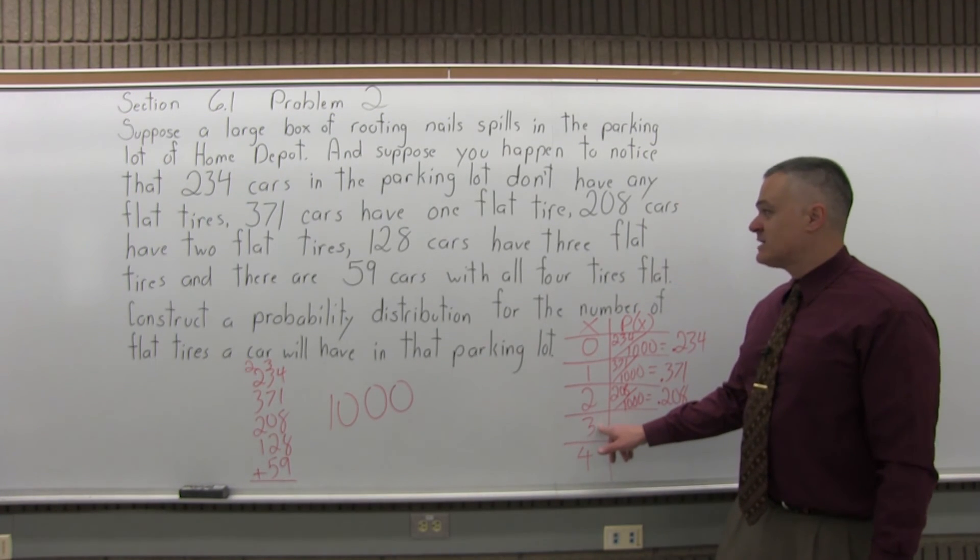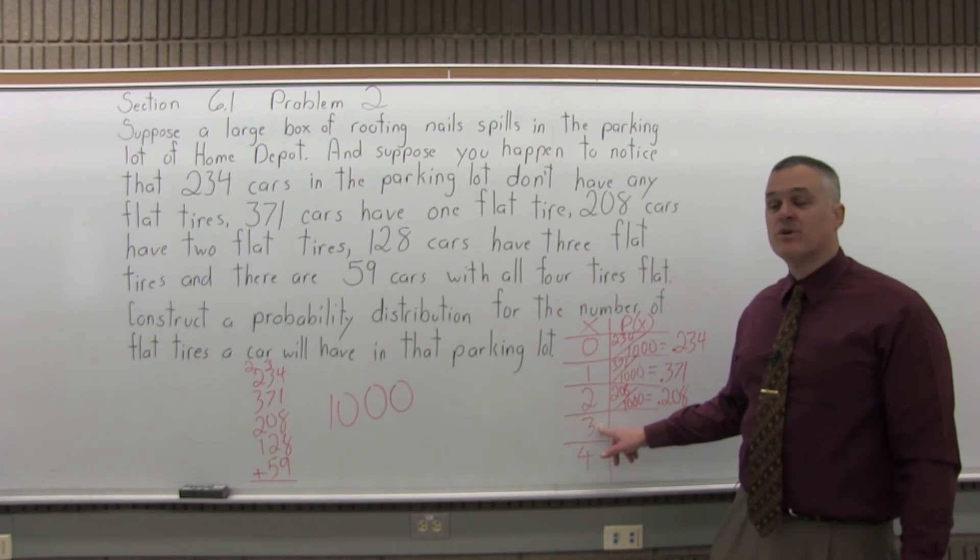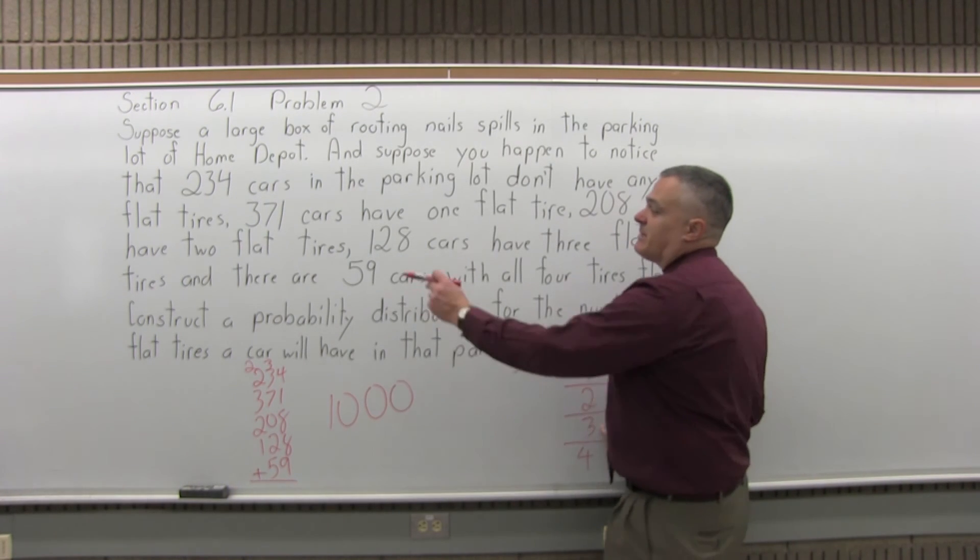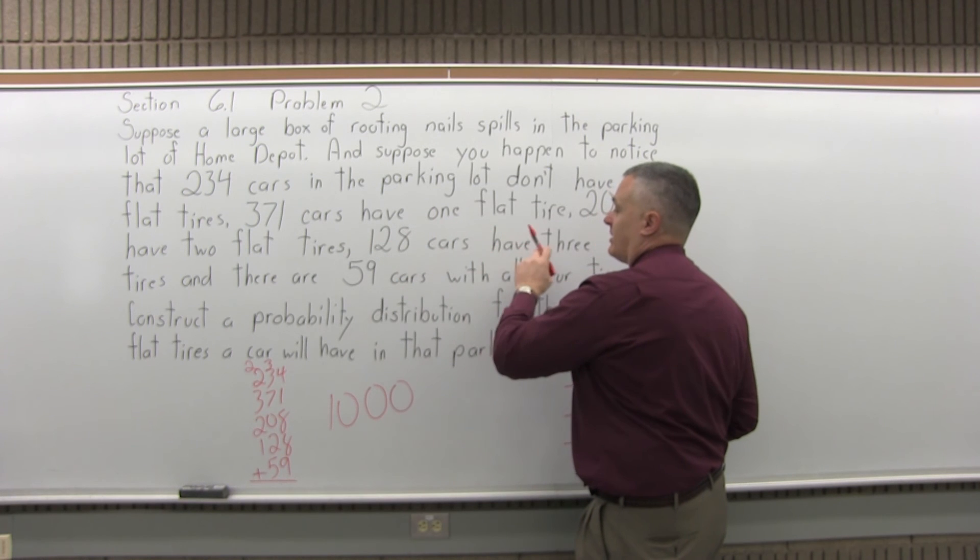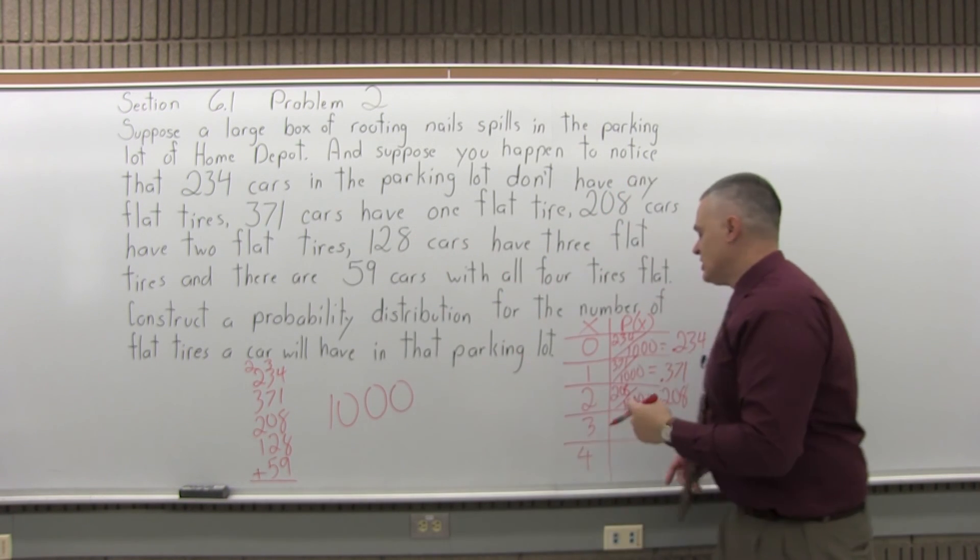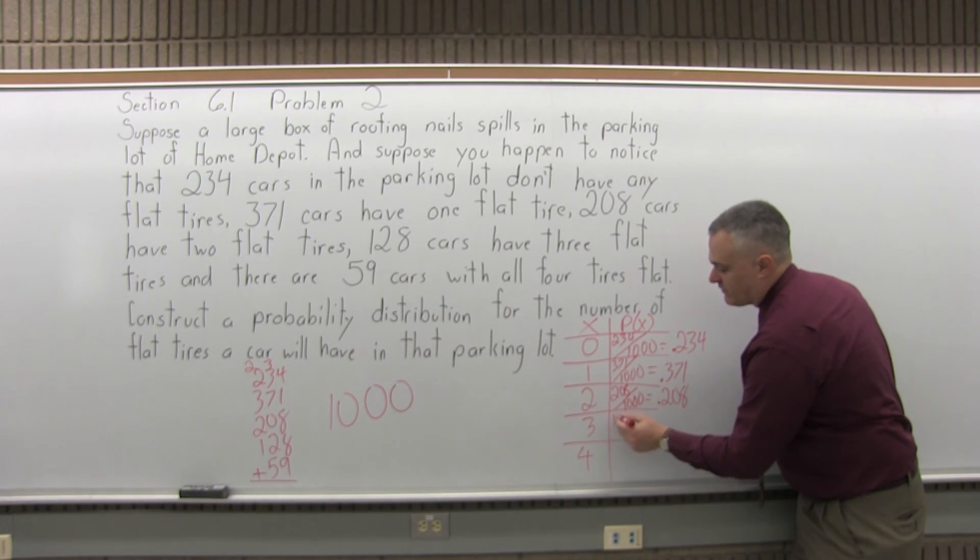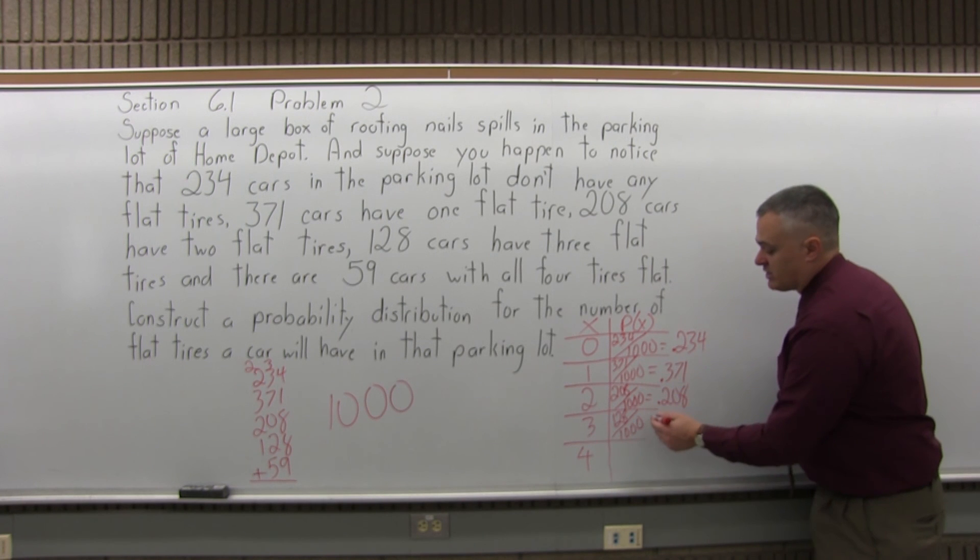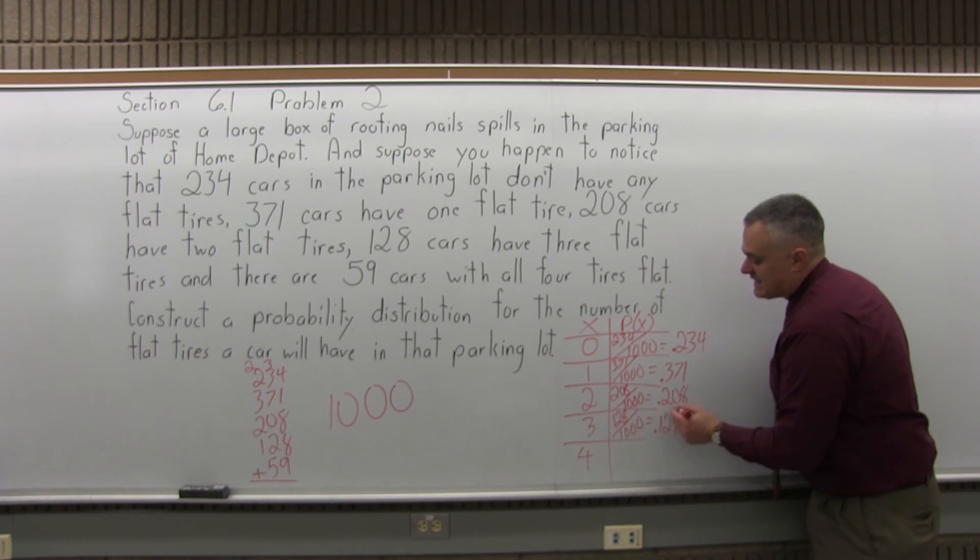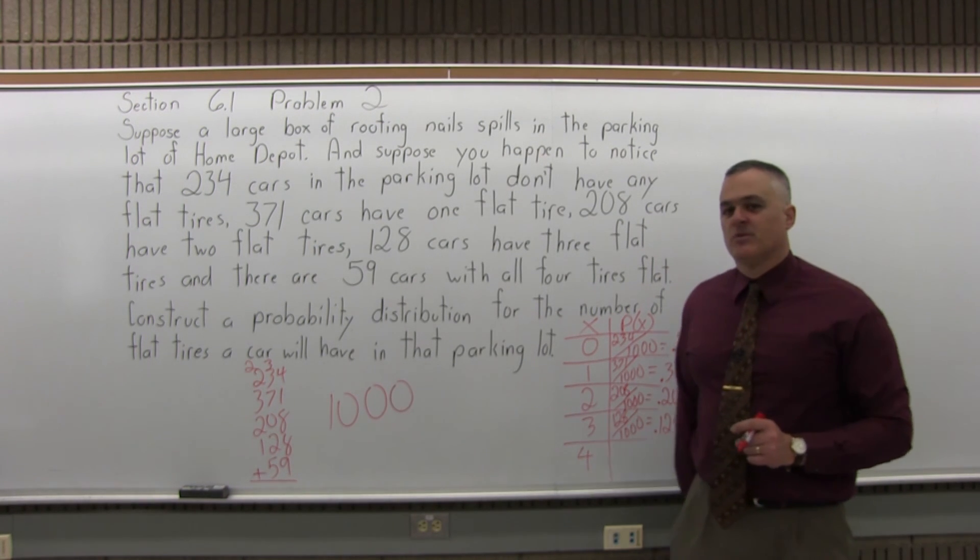Next possible outcome is that a car would have three flat tires. As you read the paragraph again, you would find that there are 128 cars in that parking lot that have three flat tires. So the probability of having three flat tires is 128 cars over 1,000 cars altogether, which can be converted to the decimal 0.128 or slightly less than a 13% probability.